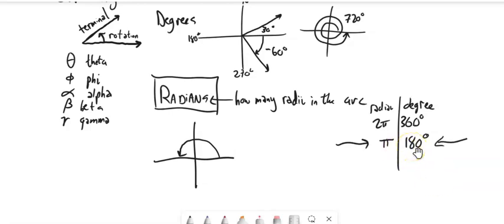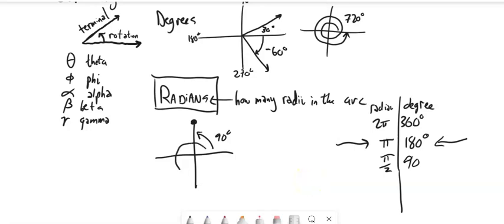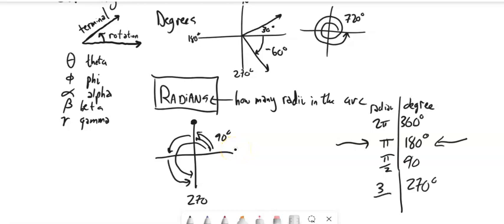Let's think about 90 degrees — that's halfway to 180, so it must be half of π, which is π over 2. And 270 degrees: that's π/2 plus another π/2 (which is π) plus another π/2, so it's three halves of π, or 3π/2.